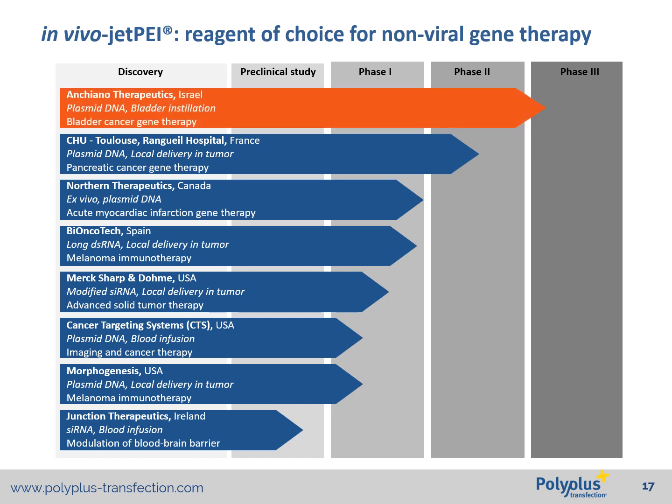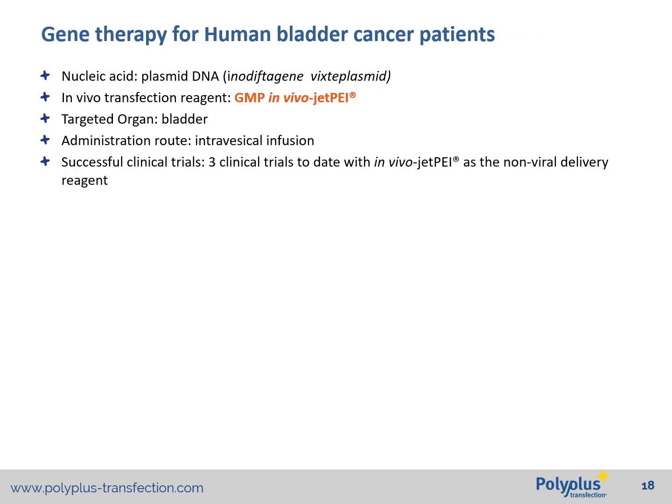Our most advanced customer is Ankeano Therapeutics, who are developing a bladder cancer gene therapy. We were really excited to hear that they had started the pivotal phase study with our lead candidate. So how does their bladder cancer therapy work? On the molecular level, in vivo-jetPEI transfection reagent is able to encapsulate and condense the plasmid DNA into less than 100 nanometer nanoparticles.